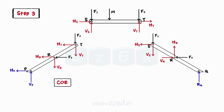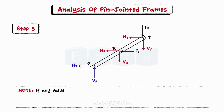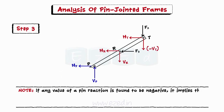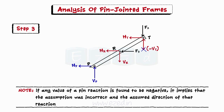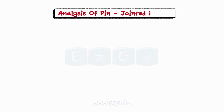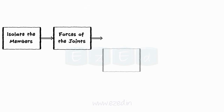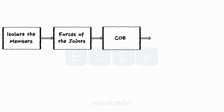Apply conditions of equilibrium to the members separately to calculate pin reactions wherever possible. Note that if any value of a pin reaction is found to be negative, it implies that the assumption was incorrect and the assumed direction of that reaction must be reversed. The following problem will be helpful to understand the concept — how we isolate the members, show the forces at the joints, and apply conditions of equilibrium to calculate the forces in the joints of the frame.